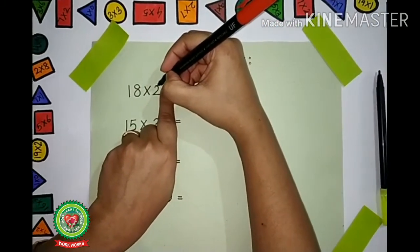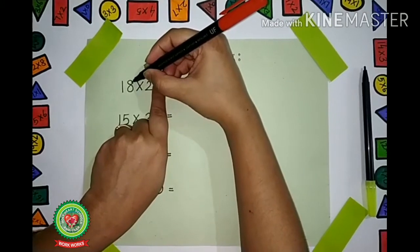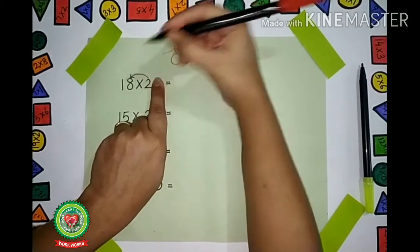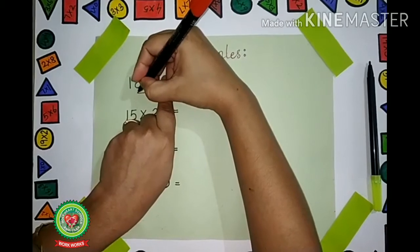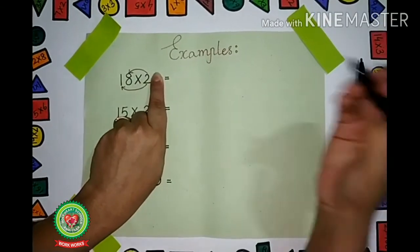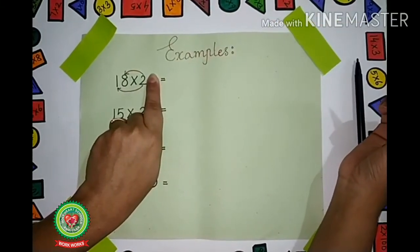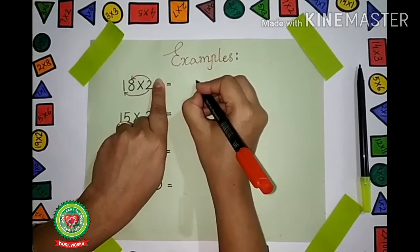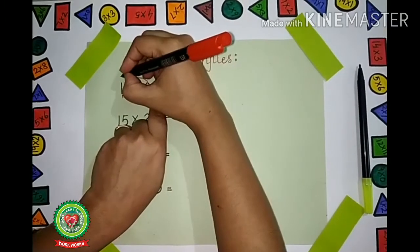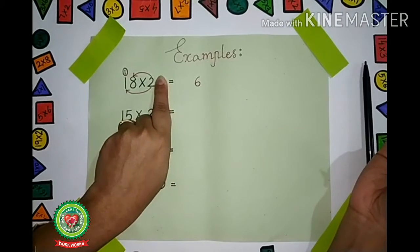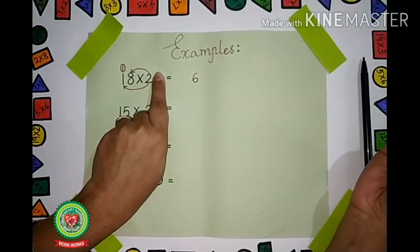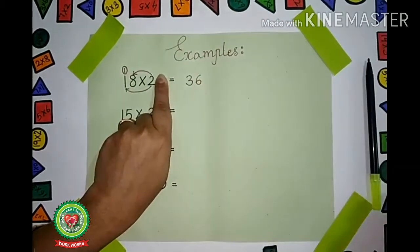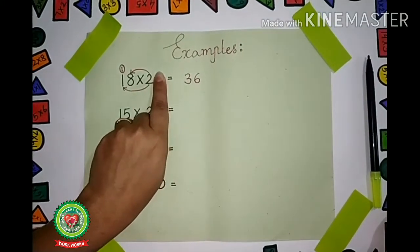Now children, you have to multiply 2 with the first number given from the right hand side, then the next number. First we will multiply 2 with 8, then we will multiply 2 with 1. What is 2 × 8? 2 × 8 is 16. Write 6 over here and 1 carry. Now 2 × 1 plus 1 carry is 3, so we write 3 over here. Our number is 36.